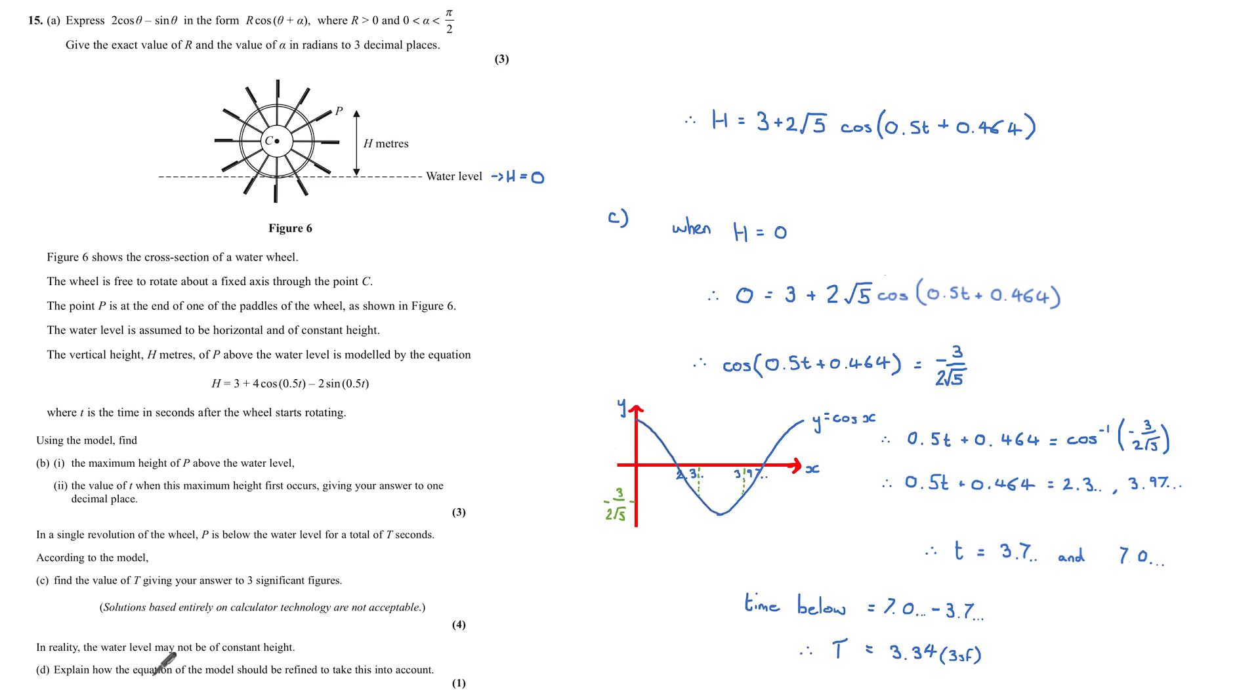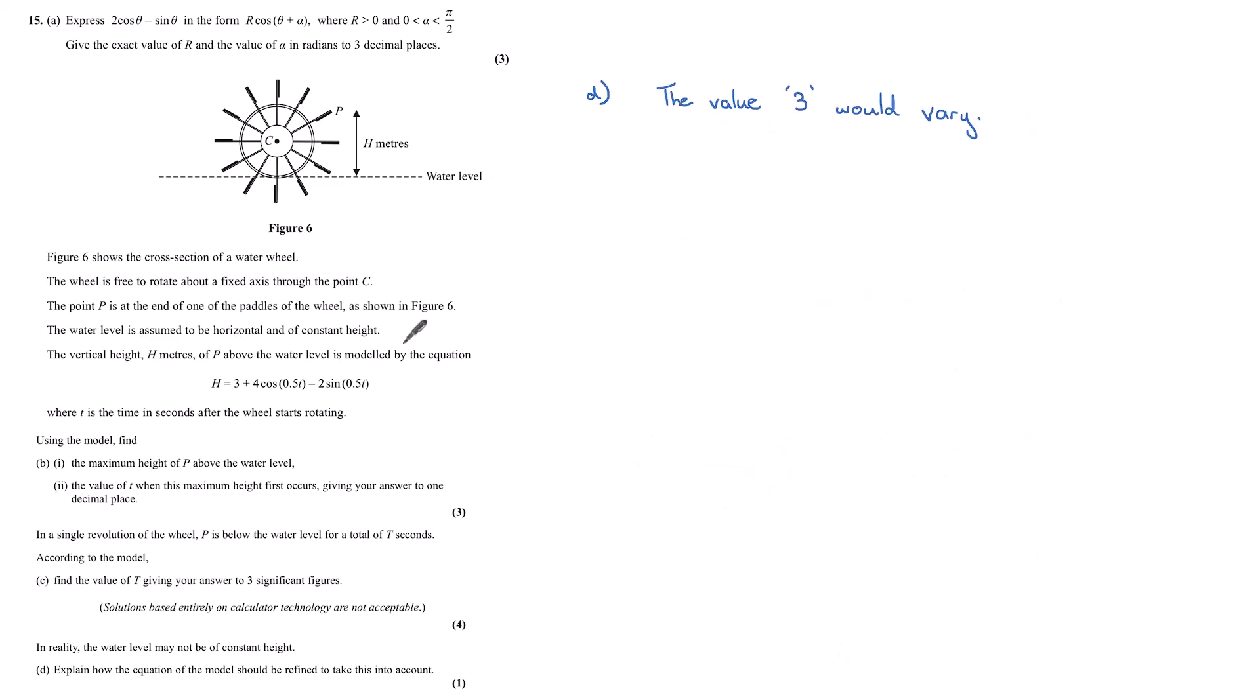In reality, the water level may not be of constant height. Part D: explain how the equation of the model should be refined to take this into account. Well, here's my model: h equals 3 plus 4 cos(0.5t) minus 2 sine(0.5t). This part here with the cos and sine, we know to be the reflection of h rotating. And so this constant value 3 is the value assigned to this constant of water level height. So if we didn't have a constant height for water, then this value of 3 would need to vary.